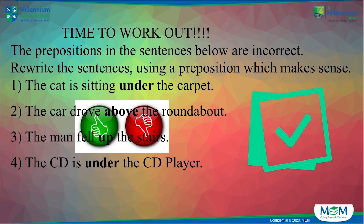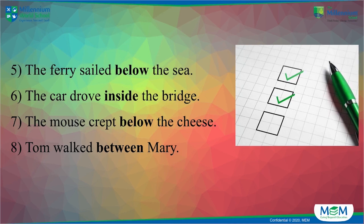Now that we have understood simple prepositions to a very good extent, let me see how well you have understood the whole thing. It's a small exercise you can do in a jiffy — the prepositions in the sentences below are incorrect. There is a highlighted preposition in every sentence and you need to rewrite the sentences using a preposition which makes sense. For example, 'The cat is sitting under the carpet' — why would the cat be under the carpet? Generally, the cat is sitting on the carpet, so the word 'under' is wrong and you replace it with 'on'. The next two slides you are going to work out these sentences, write them in a notebook and keep it handy so we can discuss them in our next video.